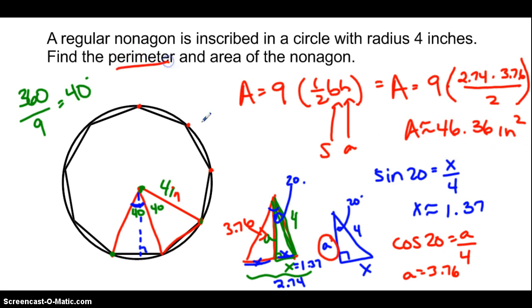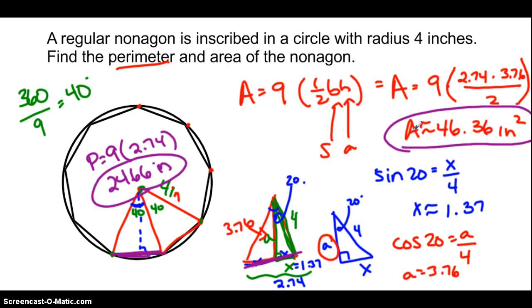Now, we were also asked to find the perimeter. Well, the perimeter is just going to be 9 times the length of the side. And we know that the length of the side of the triangle, which is right here, which is the same as the polygon side, is 2.74. So 9 times 2.74 gets me 24.66 approximately, and that's inches for the perimeter. So here's our area, and there's our perimeter.